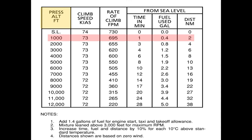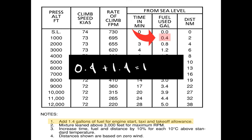We will use the 1,000 feet pressure altitude values presented on the chart to calculate our time, fuel, and distance to climb. However, before we include these values in our nav log, we want to make sure we read the notes on the bottom of the chart. For our fuel, we will have to add 1.4 gallons for engine start, taxi, and takeoff allowance, which results in a consumption of 1.8 gallons from surface to 1,000 feet.